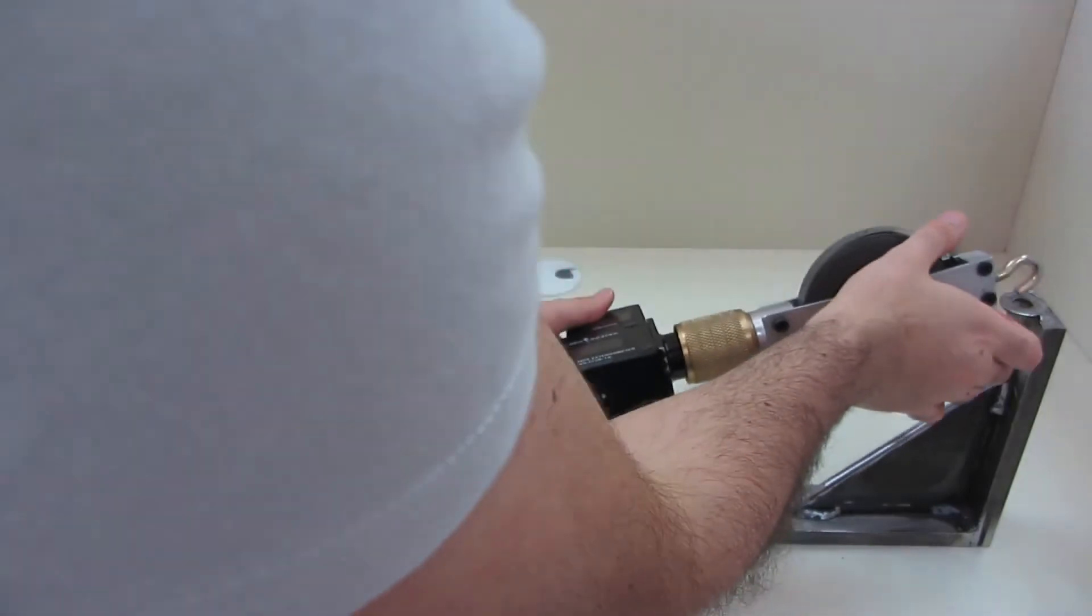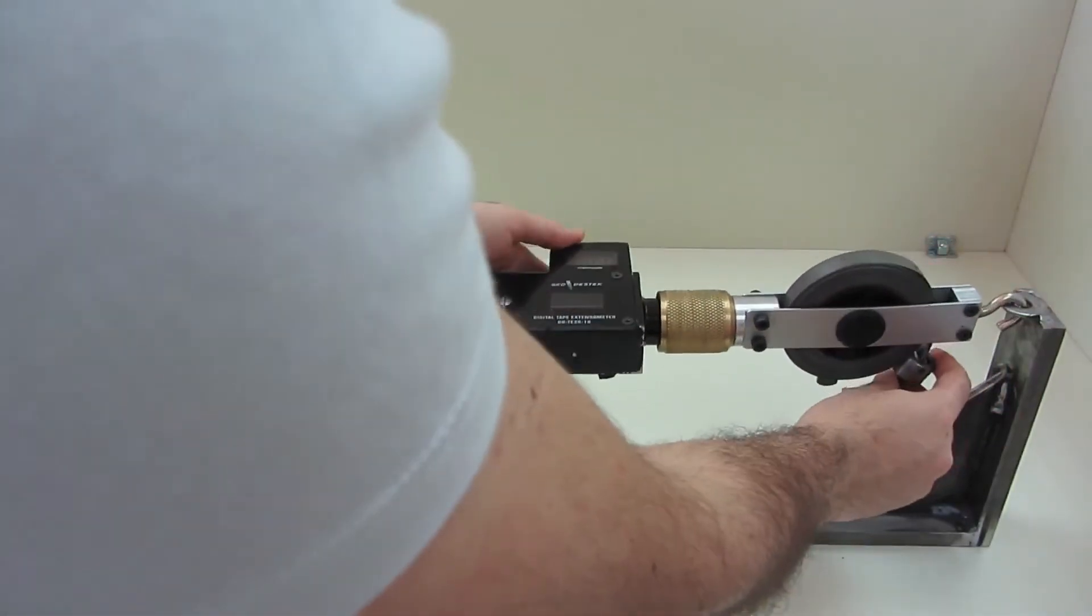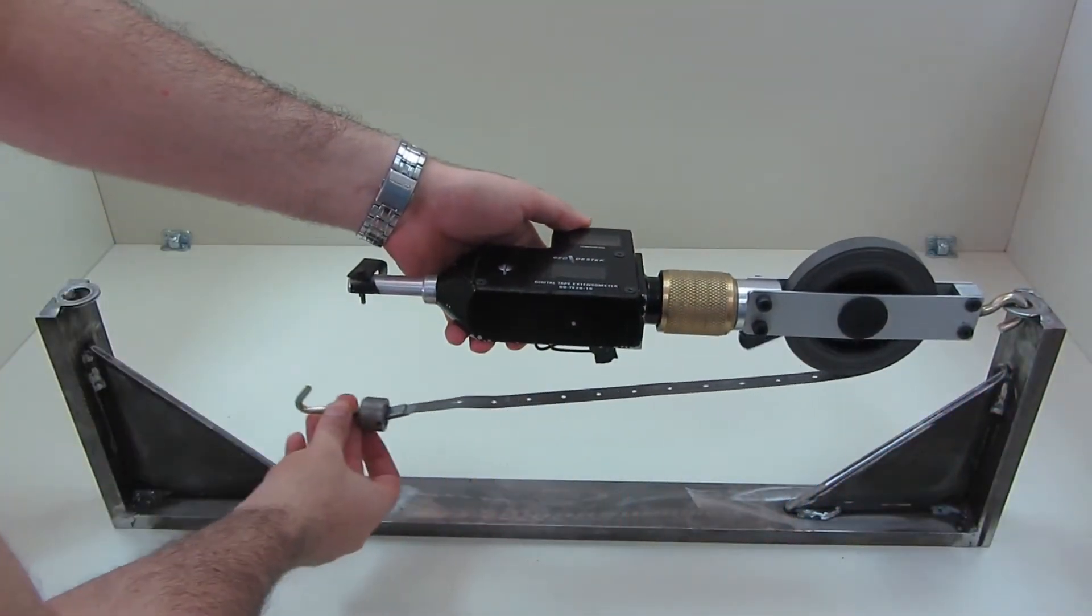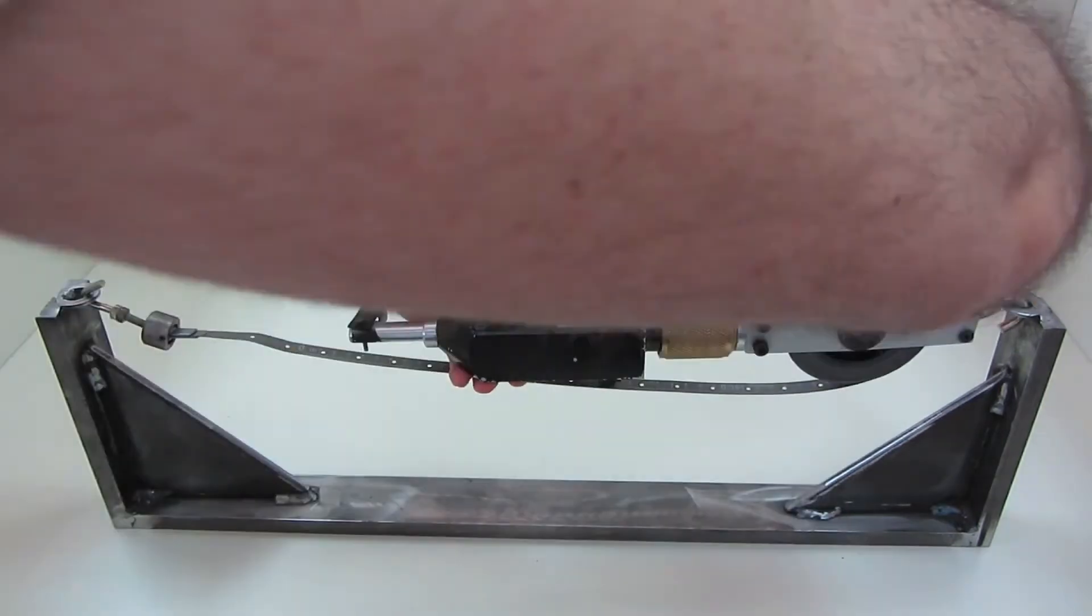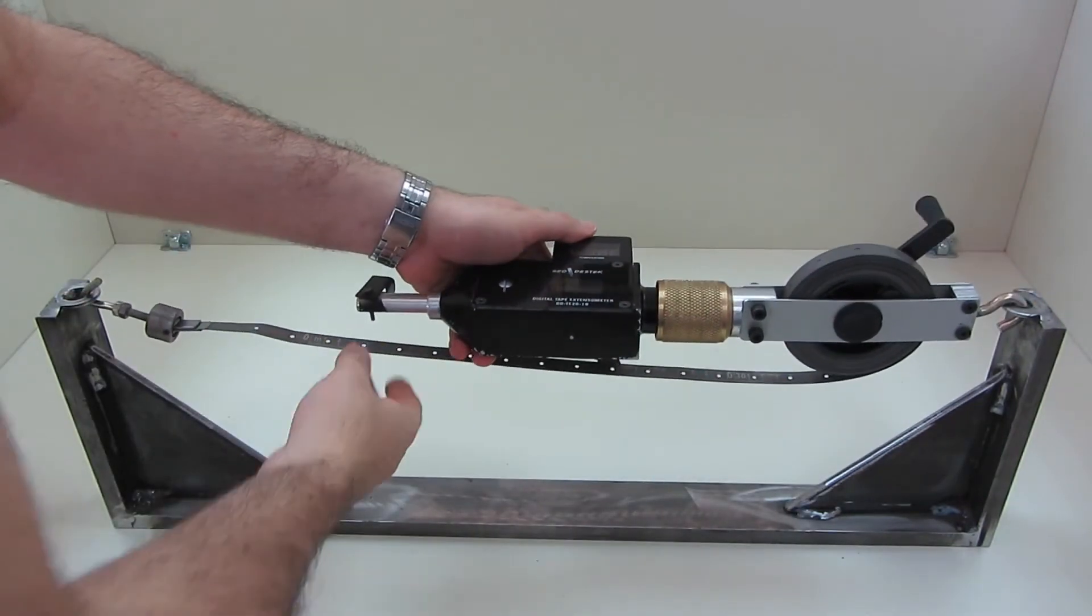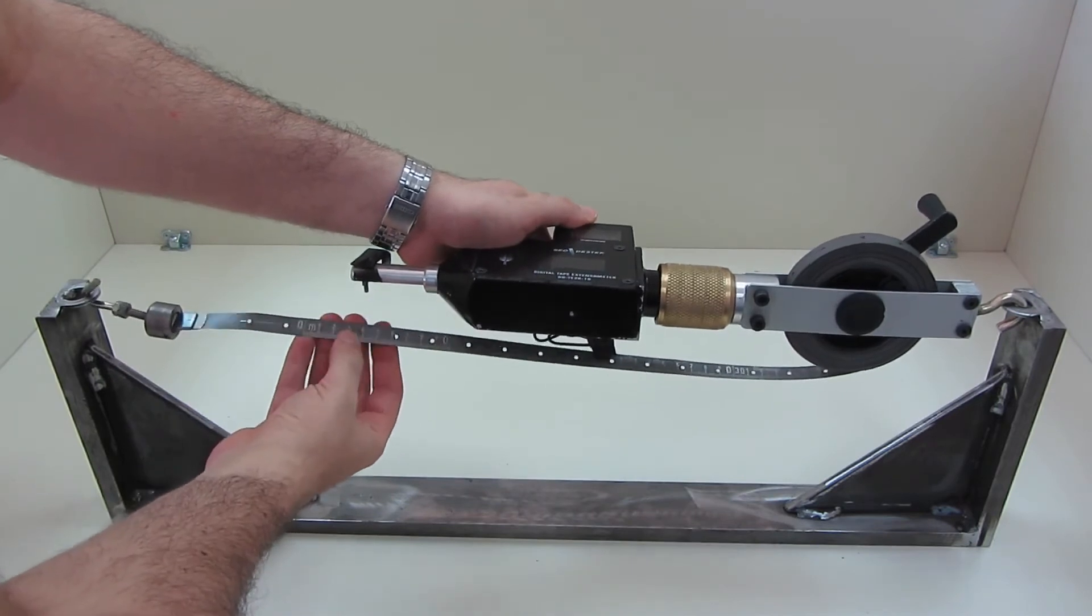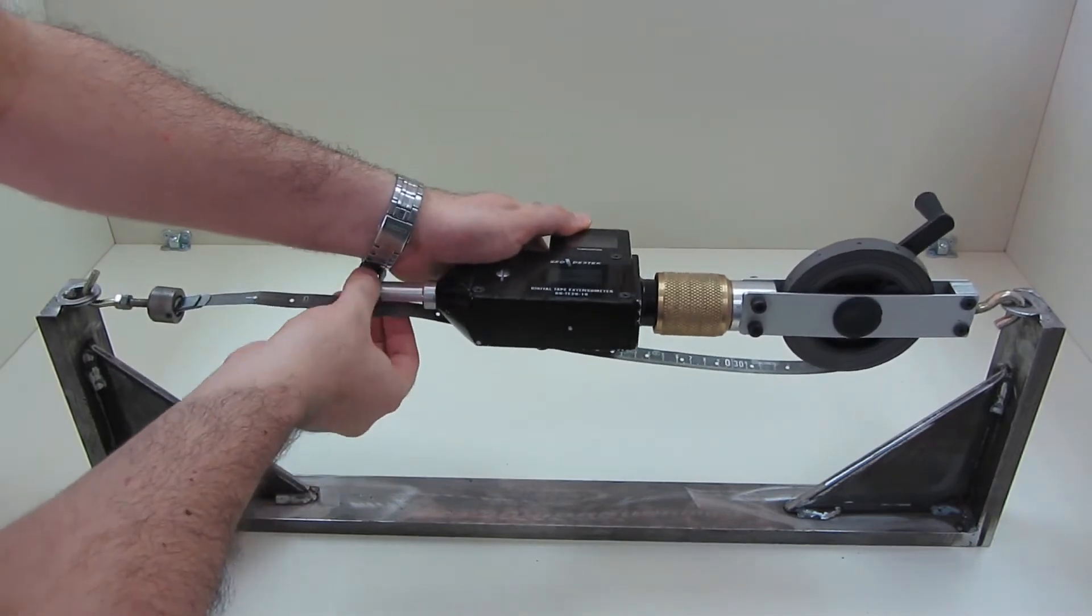The hook on the tape extensometer is attached to the first reference anchor point chosen on the structure. Similarly, the second hook on the steel measuring tape is then connected to the second reference anchor point.